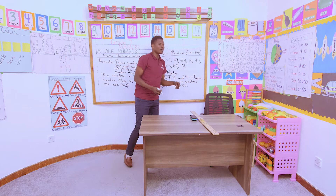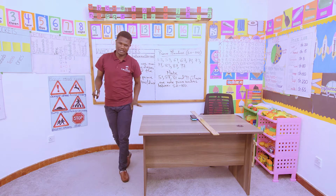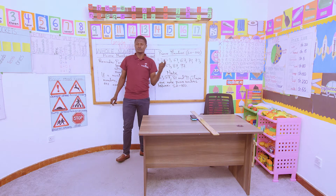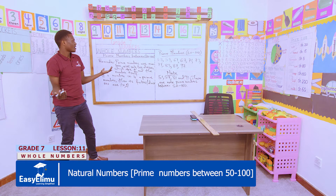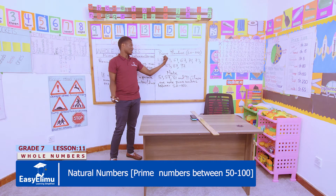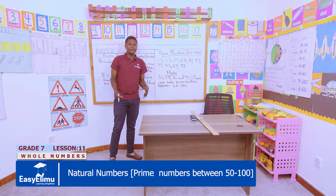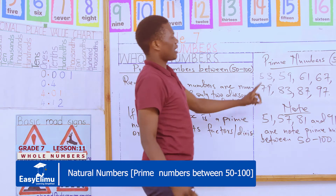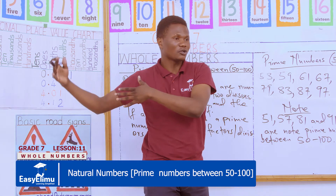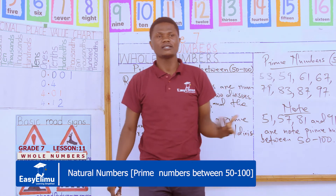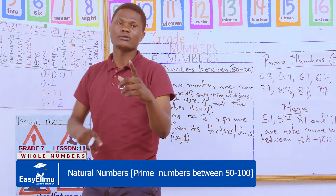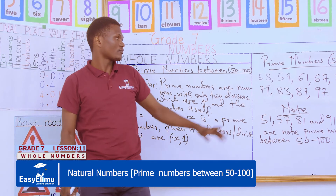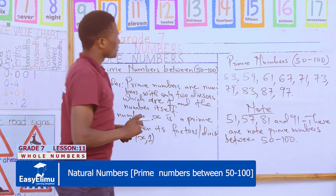So next time when you are asked to highlight the prime numbers between 50 to 100, you really have to be very keen. You don't need to cram this — all you need to do is perform the basic testing rule: just try to highlight the factors of that particular number. The moment you realize it has more than two factors, it is no longer a prime number. Later on we shall discuss another group of numbers known as composite numbers, which are numbers with more than two factors.